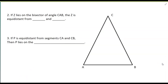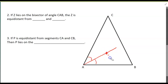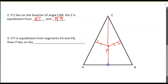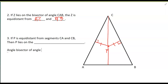If Z lies on the bisector of angle CAB, then Z is equidistant from the sides of the angle — equidistant from segment AC and segment AB. Next example: if P is equidistant from segments CA and CB, so that distance equals that distance, then P lies on the angle bisector of angle ACB.